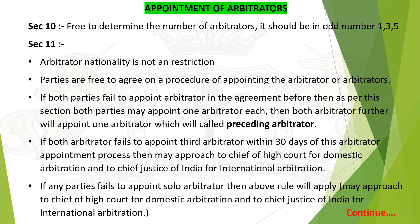Appointment of arbitrators is done under Section 10 — parties are free to determine the number of arbitrators; it should be in odd numbers like 1, 3, or 5. Section 11 of the Arbitration Act states that arbitrator nationality is not a restriction. Parties are free to agree on a procedure of appointing the arbitrator. If both parties fail to appoint an arbitrator, both parties may appoint one arbitrator each, and then both will together appoint one presiding arbitrator.